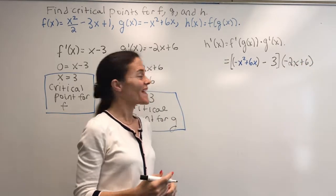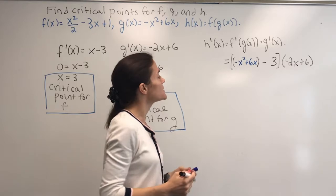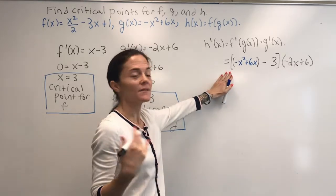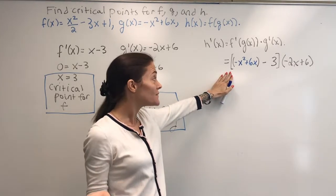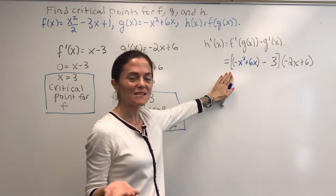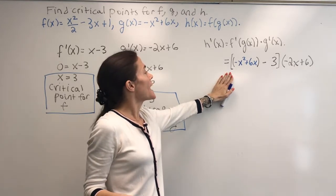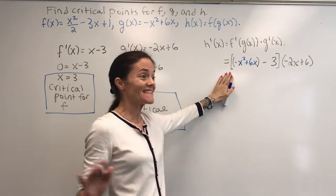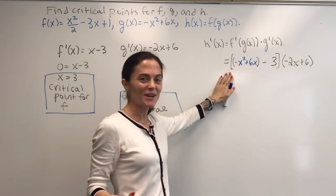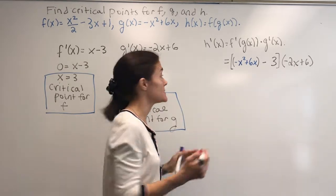This is the chain rule, and this is the derivative of h. If you look at this, and I haven't even really simplified, but you can see this is a polynomial, and h prime is going to exist everywhere. So the only critical points will be where this is 0.